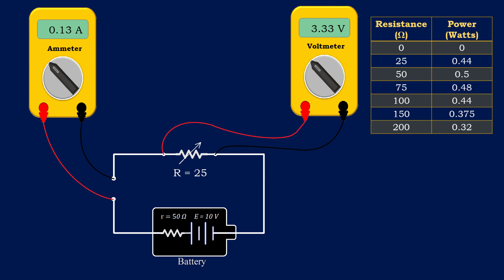If the resistance of the variable resistor is set to 25 ohms, then the reading of the voltmeter becomes 3.33 volts and the current would become 0.133 amperes, and power becomes 0.44 watts.